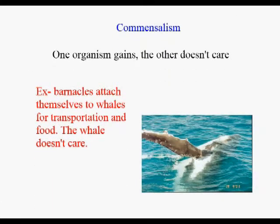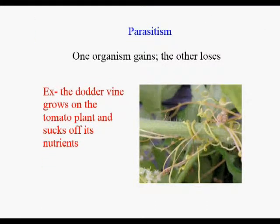A second type of symbiotic relationship is commensalism. Commensalism is a situation where one organism wins and the other doesn't lose or win — it's kind of neutral. A really good example would be a large whale. If you've ever looked at old movies, you see whales are just covered with barnacles, like ships. The barnacles attach themselves to the whales and use them for transportation and food. You would think the whale would be bothered by this, but it's so big it just doesn't care at all. So the barnacles win, the whale really doesn't care — that would be an example of commensalism.